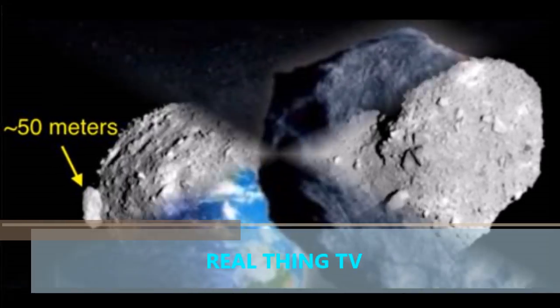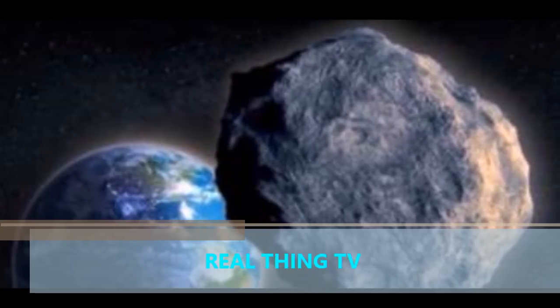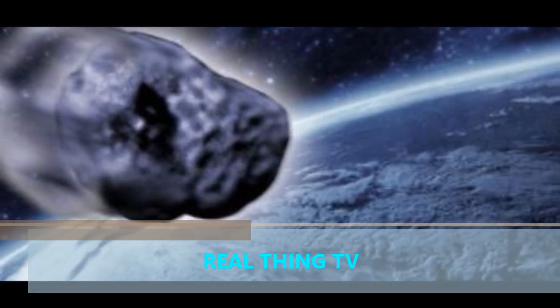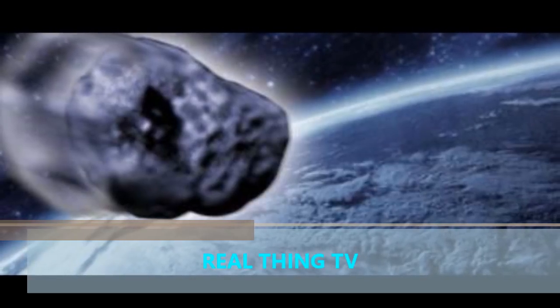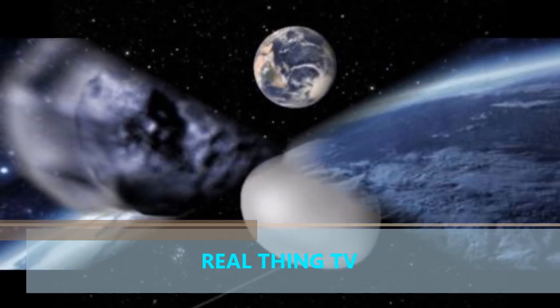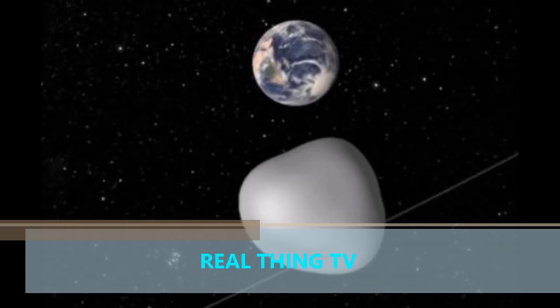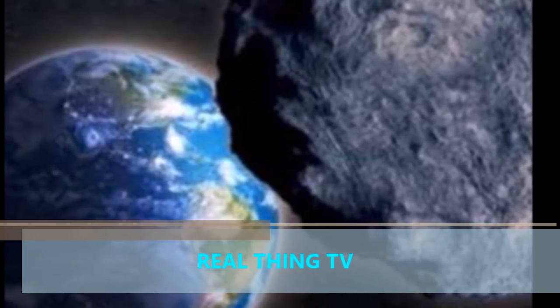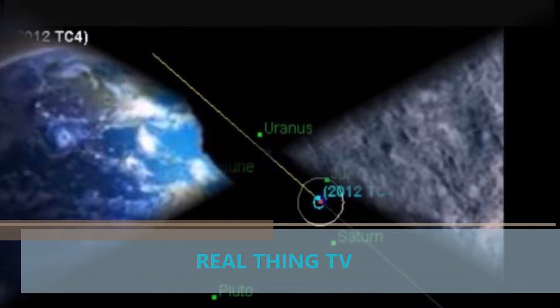NASA has insisted we have nothing to fear from the close flyby of 2012 TC4, which is as big as a tower block and traveling towards us at more than 40,000 miles per hour. It is believed to be bigger than the Chelyabinsk meteor which exploded above Russia, damaging thousands of buildings and injuring 1,500 people in 2013.